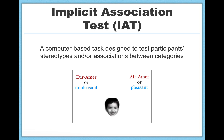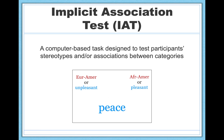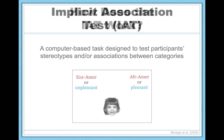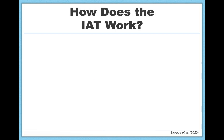Now I just mentioned the implicit association test, which is commonly abbreviated as the IAT. Let's talk more about what that test actually is. The IAT is a computer-based task designed to test participants' stereotypes or associations between categories such as social groups. Let me describe how the IAT works by telling you about an IAT that I designed and commonly use in my research. I'm not going to tell you about the results of this IAT quite yet — we'll talk more about that when we get to sexism. The important part here is just that you start to get a gist for how the IAT as a method works.